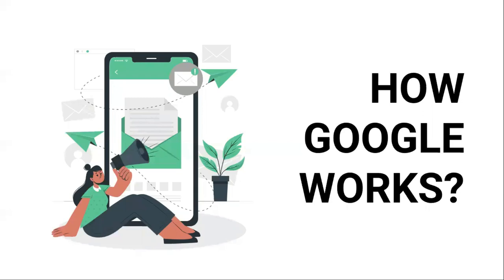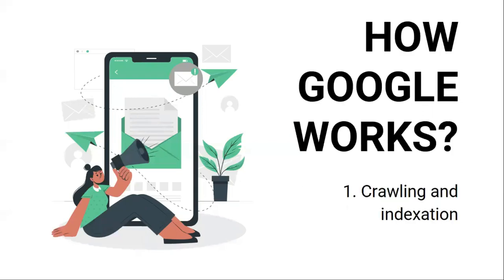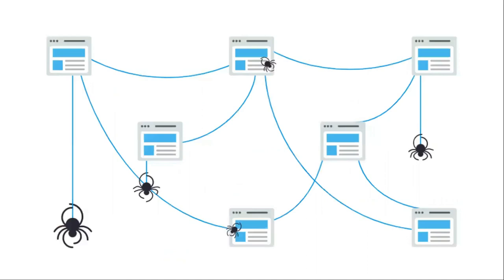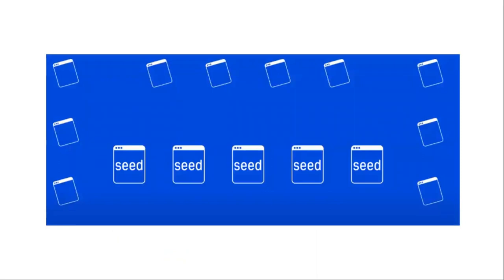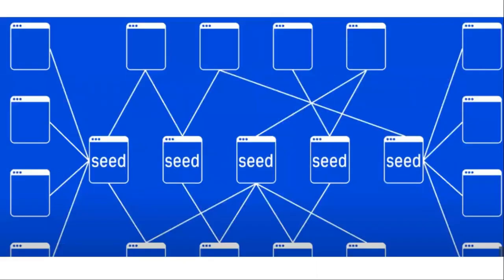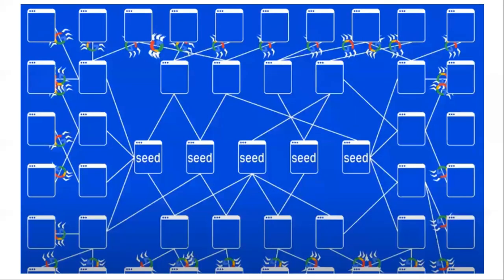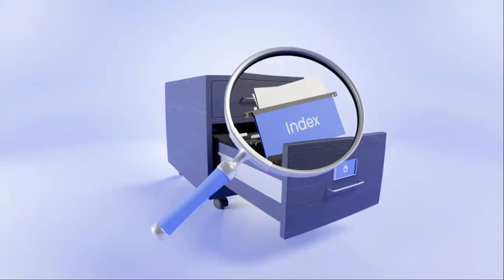Now let's talk about how Google works, and there are two parts to it. The first is crawling and indexation. These two things are what actually allow Google to discover web pages and create their search index. Google uses crawlers, also known as spiders, which gather publicly available information from all over the web. The spiders start crawling from a list of known URLs, what they call seeds, then follow the hyperlinks on those pages and crawl those newly discovered pages. This process goes on and on, allowing them to collect a ton of information. Then they take all of this data back to Google servers, which they add to their search index — and that's what people like you and I are searching through when we enter a query in Google.